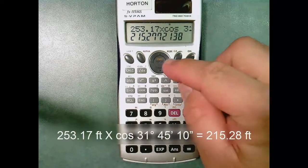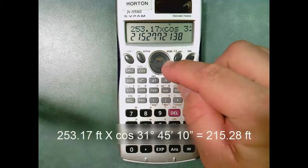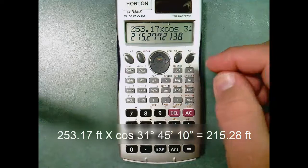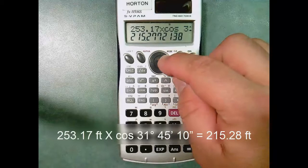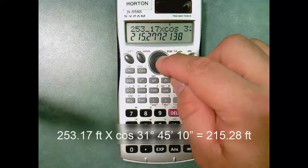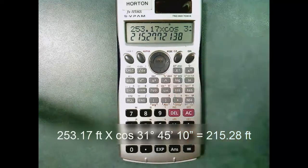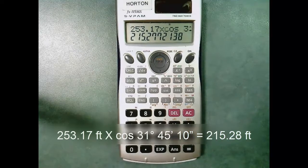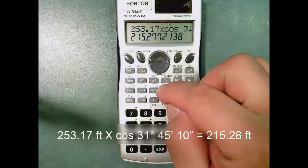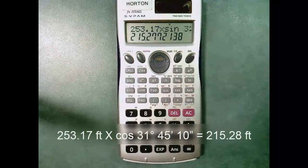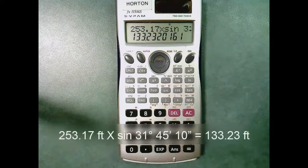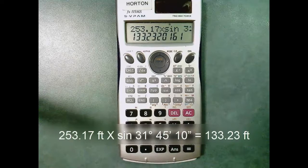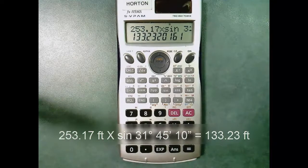Now look at the replay button right up here. You can see embossed in the middle of the round button — it says replay. Watch the cursor on my screen: when I use the right arrow, I am moving the cursor over and I can now highlight the first letter of cosine. If I type in the sine function, notice it replaces cosine with sine. Therefore, when I hit equal, I get that now solved for 253.17 times the sine of the very same angle, 31 degrees, 45 minutes, 10 seconds.